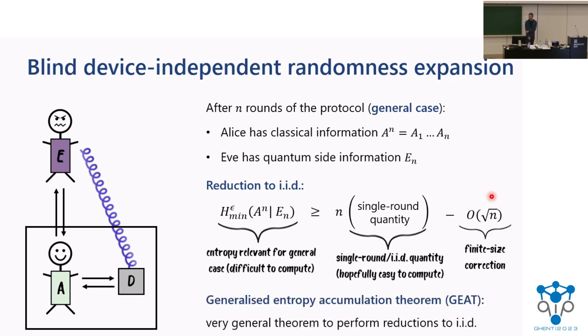Our main result, this generalized entropy accumulation theorem, is a very general way of performing these reductions to IID.